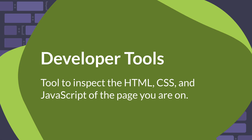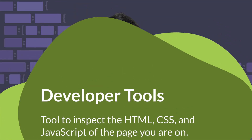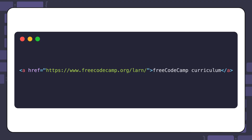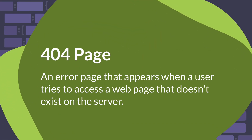The developer tools allow you to inspect the HTML, CSS, and JavaScript of the page you are on. Let's take a look at an HTML example that contains a small bug in the anchor element. When you click on the link, it will lead to a 404 page. A 404 page is an error page that appears when a user tries to access a web page that doesn't exist on the server.